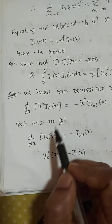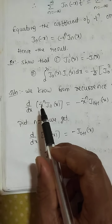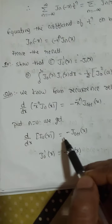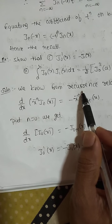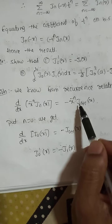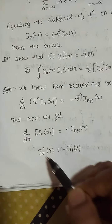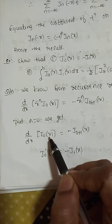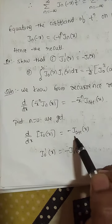Put n equals 0: we get d/dx of [x^0 · J_0(x)] equals minus x^0 · J_1(x), which simplifies to d/dx of J_0(x) equals minus J_1(x). This proves part 1.